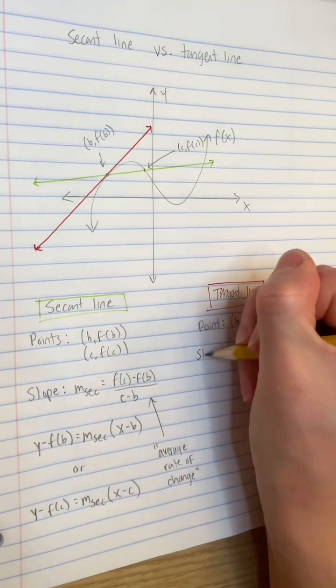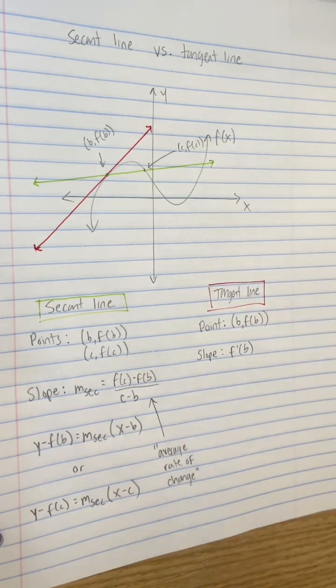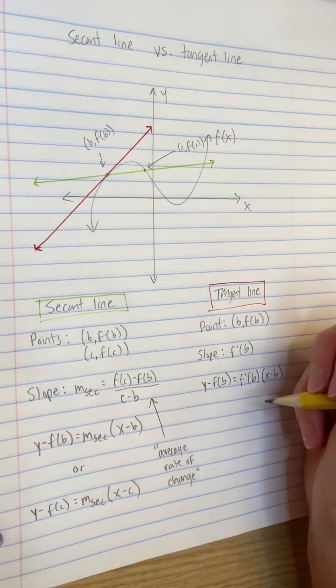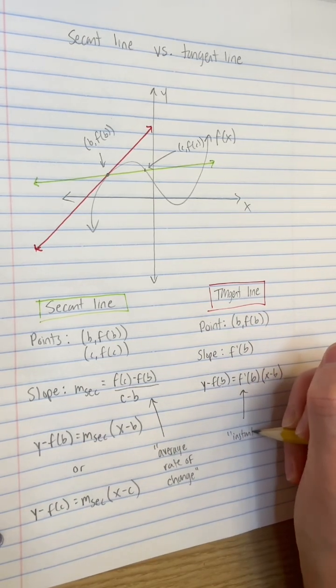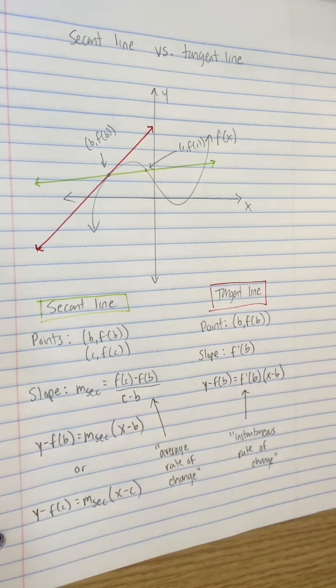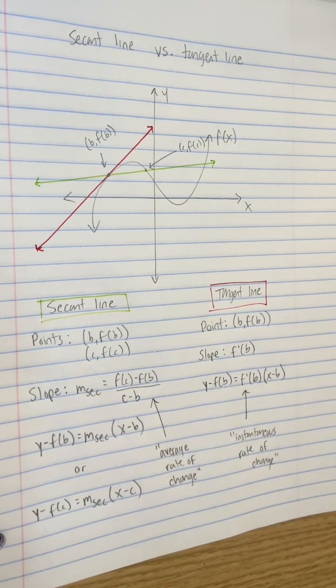Its slope is f prime of b, the derivative of f of x at x equals b. Plug in that slope and our one point into point slope form and we have the equation of the tangent line. Its slope can be thought of not as the average, but as the instantaneous rate of change of f of x at x equals b.